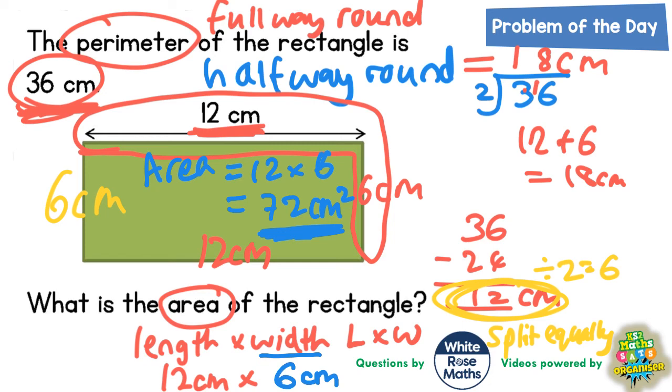If you couldn't work that out in your head, of course you could do a quick column method. 12 times 6. 6 times 2 is 12. Put the 2 in, carry the 1. 6 times 1 is 6 plus the 1 is 7. And we still get 72 centimeters squared. See you next day.